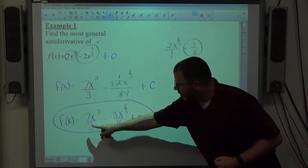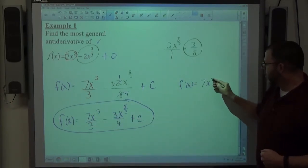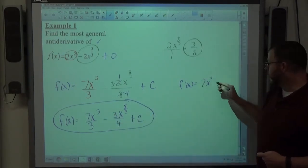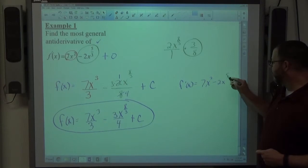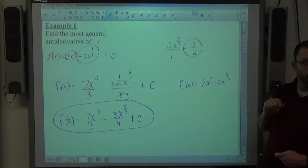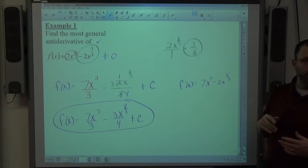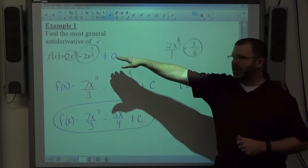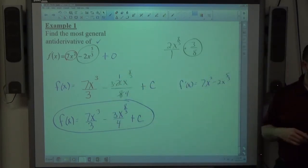3 times 7 thirds is equal to 7, we drop the power by 1. 8 thirds times 3 fourths is equal to 2, we drop the power by 1. The derivative of c is 0. Same expression. So that's all you have to do to check an anti-derivative. If you differentiate this, you get the exact same thing you started off with. You have the right answer.